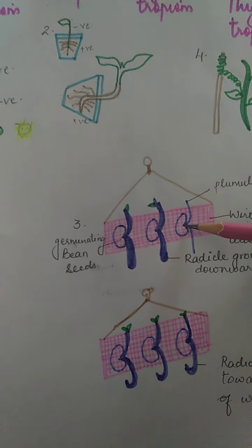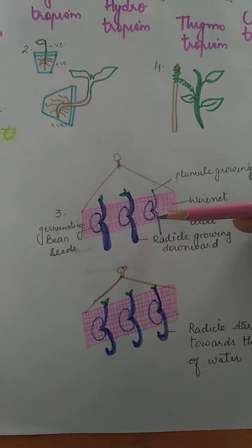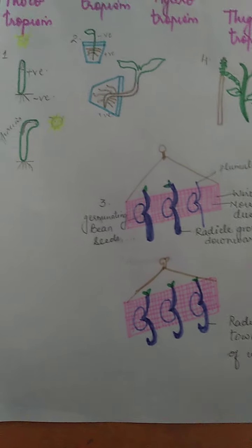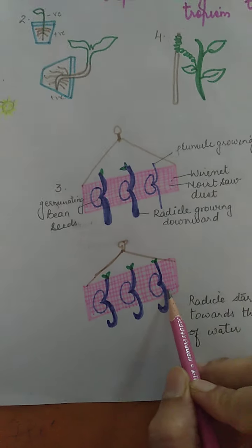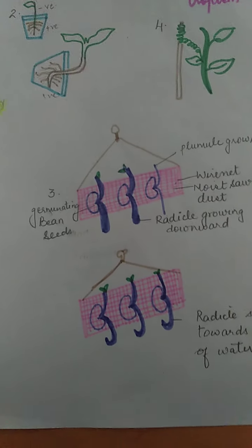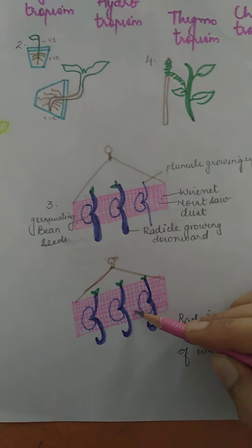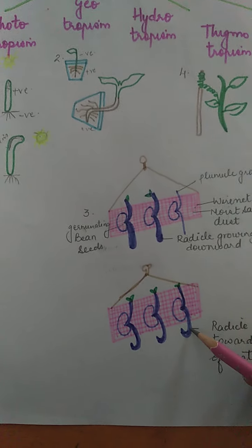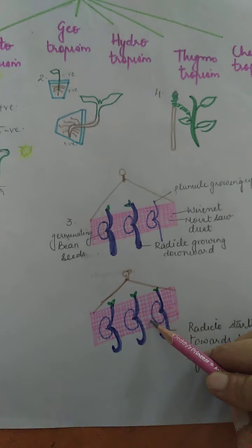The bean seeds start germinating — the plumule grows upwards against gravity, and the radicle grows downwards towards gravity since roots are positively geotropic. Now, this setup is hanging in the air. After a few days, the radicle finds no source of water in the atmosphere, so it starts turning upwards back towards the moist sawdust. The roots, which are generally positively geotropic, show movement towards the source of water — so roots are positively hydrotropic.